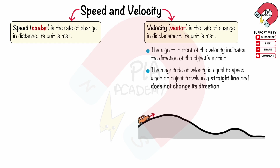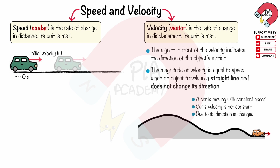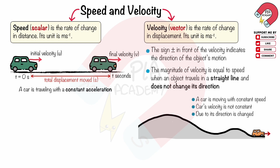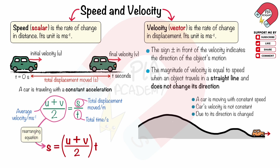For example, a car travels with constant speed up and down a hill. While its speed remains constant, its velocity is not constant due to the changing direction of movement. A car traveling at initial velocity u for t seconds reaches final velocity v and covers displacement s meters. Assuming constant acceleration, the average velocity is (u + v) / 2, and the equation for displacement is s = (u + v) / 2 × t. This formula is used for constant accelerated motion in a straight line only.